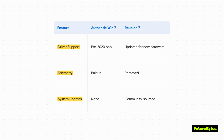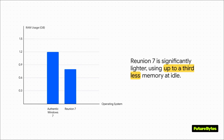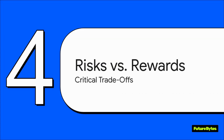And you know all that built-in data collection — the telemetry that sends info back to Microsoft? Reunion 7 rips all of that out for better privacy. And all this tinkering and stripping things down leads to one of the biggest draws for enthusiasts: pure performance. By getting rid of all those extra background processes, Reunion 7 is just lighter. It uses about a third less memory when it's just sitting there. If you've got an older computer, that's a huge deal — it means a faster, much snappier experience.